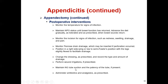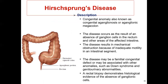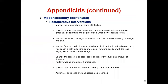Maintain nasogastric tube suction and the patency of the tube. Administer antibiotics and analgesics as prescribed. After surgical operation, it is very important to monitor for complications like perforation or rupture. Sudden relief of pain may indicate perforation or peritonitis.